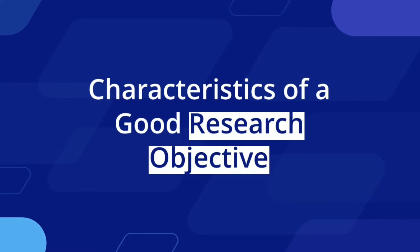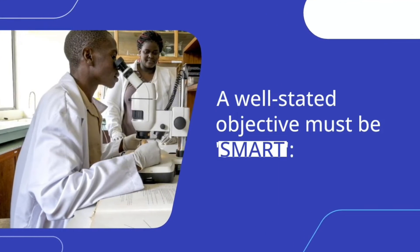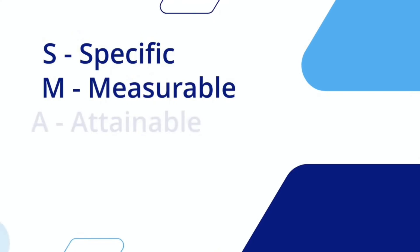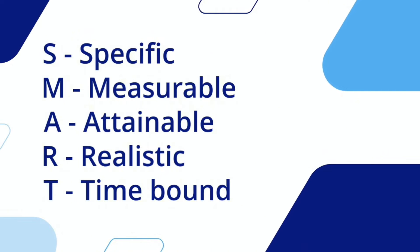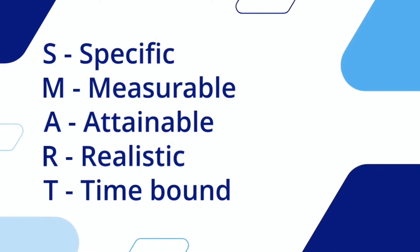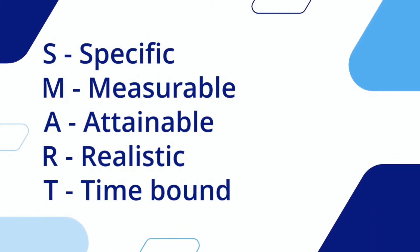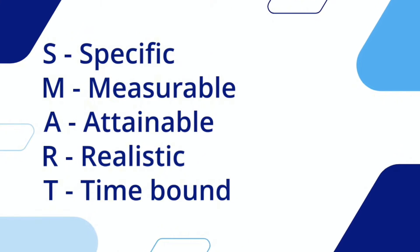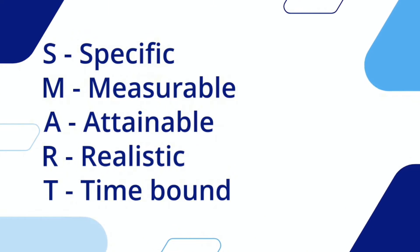A good research objective must be SMART. S is for Specific — a good research objective should be clear and focused on a specific aspect or goal of the study, avoiding being too broad or vague so researchers know exactly what they want to achieve. M is for Measurable — the objective should be measurable, meaning there should be a way to determine if the research goal has been achieved, using concrete and quantifiable terms to assess the outcome.